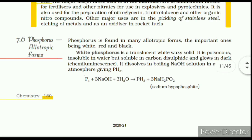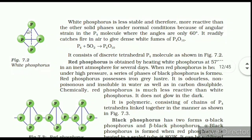7.6 Phosphorus — Allotropic Forms. Phosphorus is found in many allotropic forms; the important ones being white, red, and black. White phosphorus is a translucent white waxy solid; it is poisonous, insoluble in water but soluble in carbon disulfide, and glows in the dark (chemiluminescence). It dissolves in boiling NaOH solution in an inert atmosphere giving PH₃. White phosphorus is less stable and more reactive than other solid phases under normal conditions because of angular strain in the P₄ molecule where bond angles are only 60°. It readily catches fire in air to give dense white fumes of P₄O₁₀. It consists of discrete tetrahedral P₄ molecules as shown in Figure 7.2.